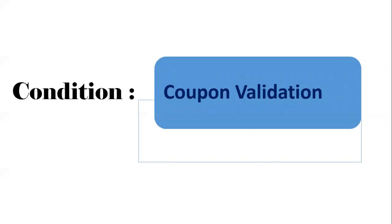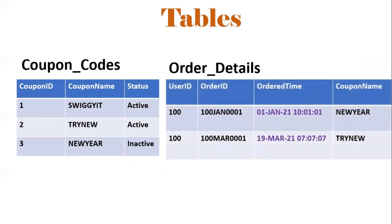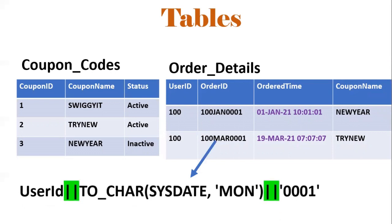Now we will look at the first condition: coupon validation - whether the coupon code entered by the user is valid or not. For this we need two tables. One is coupon_codes, which contains the list of active and inactive coupon codes. The second is order_details, which contains the list of orders placed by a user, including the coupon code applied and the order time. The order_id is a combination of user_id, the extracted month, and a sequence number. These are the two important tables: coupon_codes and order_details.